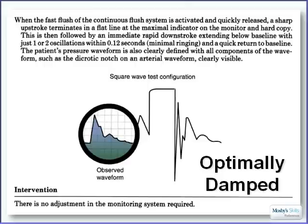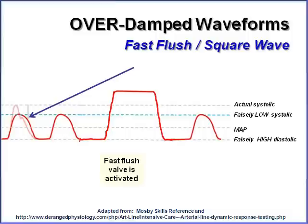Here's another example of an optimally damped waveform. You can see the dicrotic notch clearly. When you squeeze the pressure device on the tubing, you get one to two oscillations after that square wave — it dips below the isoelectric line and then bounces one or two times.